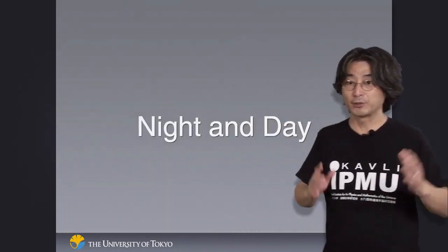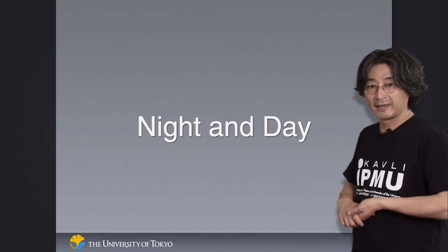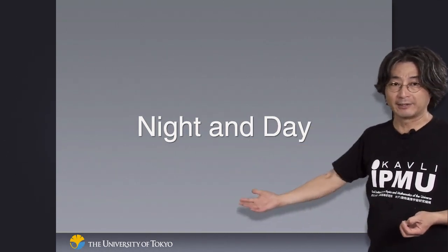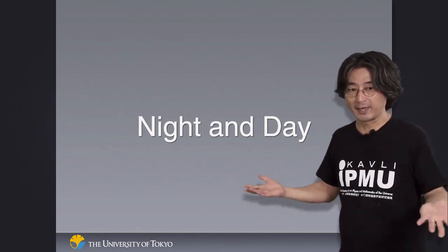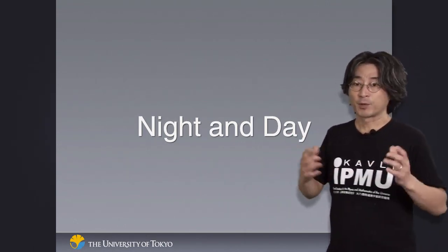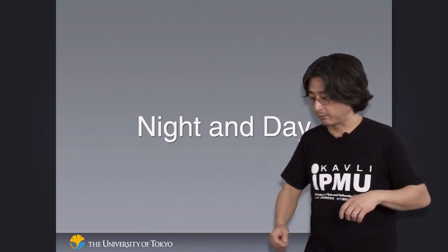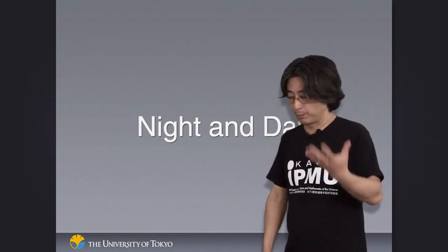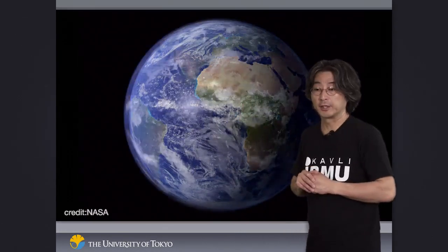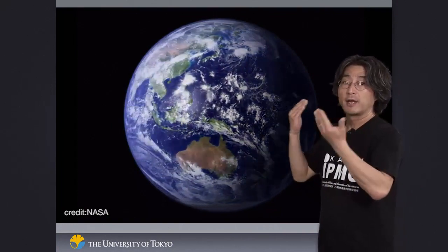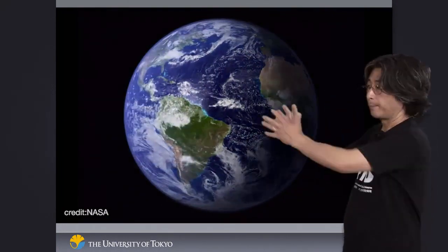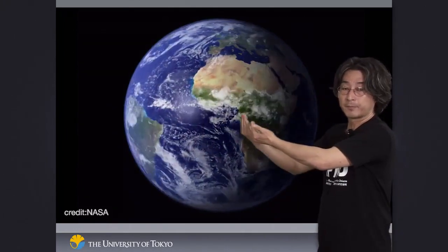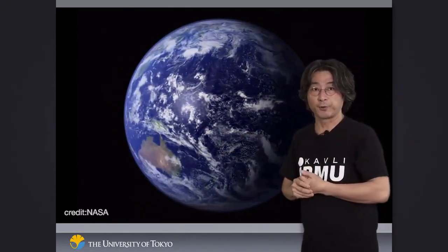The first subject is something we take for totally granted: night and day. If you wake up in the morning, you don't have to think that the sun would rise, and later that day it would go down. We never question why that happens. But that already has to do with the fact that we are floating in outer space and rotating. As shown in this animation, the day occurs because part of the Earth receives light from the sun. But we know the Earth rotates, so only the part facing the sun is lit up.